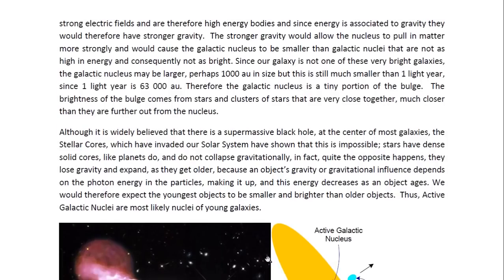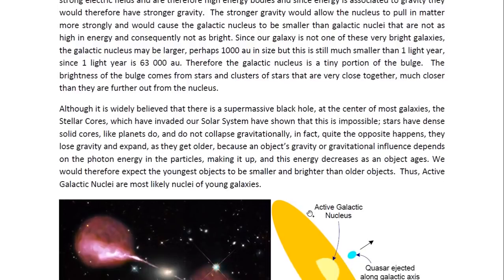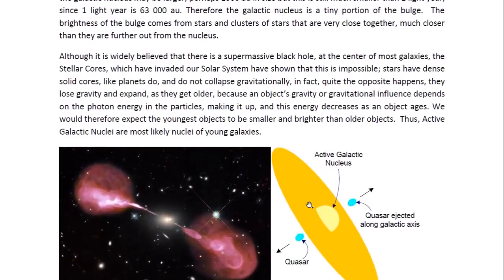Although it is widely believed that there is a supermassive black hole at the center of most galaxies, the stellar cores which have invaded our solar system have shown that this is impossible. Stars have dense solid cores like planets do and do not collapse gravitationally. In fact, quite the opposite happens. They lose gravity and expand as they get older, because an object's gravity or gravitational influence depends on the photon energy in the particles making it up, and this energy decreases as an object ages. We would therefore expect the youngest objects to be smaller and brighter than older objects. Thus, active galactic nuclei are most likely nuclei of young galaxies.